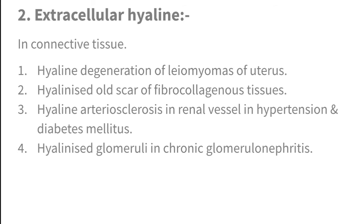Extracellular hyaline examples include: hyaline degeneration in uterine fibroids, hyalinized old scars of fibro-collagenous tissue, hyaline arteriosclerosis in renal vessels in hypertension and diabetes mellitus, and hyalinized glomeruli in chronic glomerulonephritis — where hyaline degeneration is most commonly seen when studying kidney pathology.